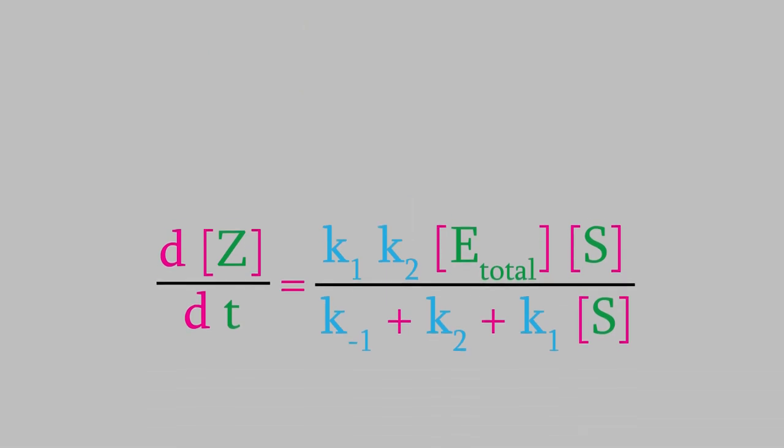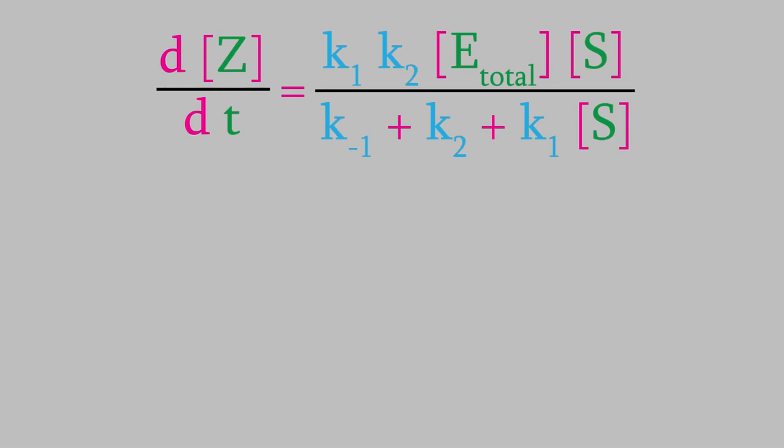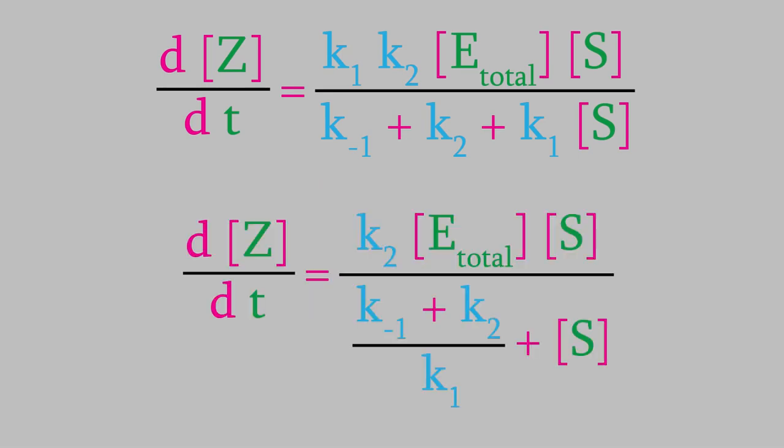One last thing. The usual way of writing this equation is by first factoring K1 out of all the terms. When we do that, here's our final result. It might seem like doing that has made this look more complicated, but it's made it so that all the rate constants are now grouped into just two places, here and here.